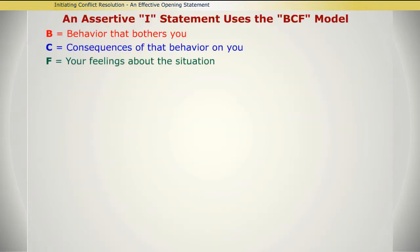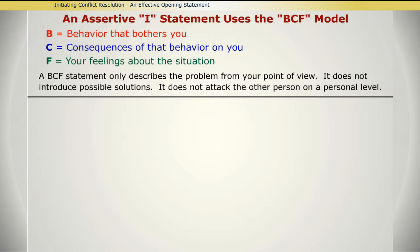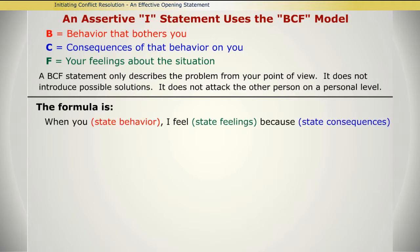An assertive I statement uses the BCF model. B equals behavior that bothers you. C equals consequences of that behavior on you. F equals your feelings about the situation. A BCF statement only describes the problem from your point of view. It does not introduce possible solutions. It does not attack the other person on a personal level. The formula is: when you state your behavior, I feel — state feelings — because — state consequences.